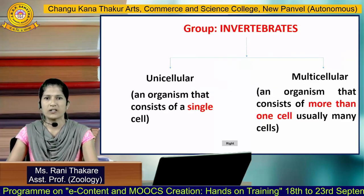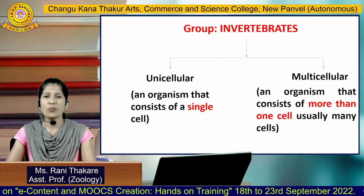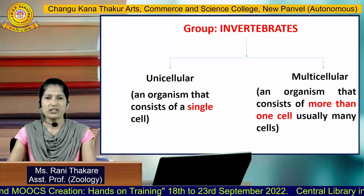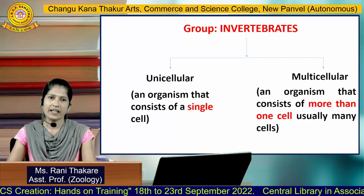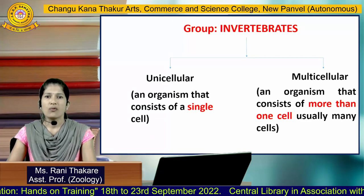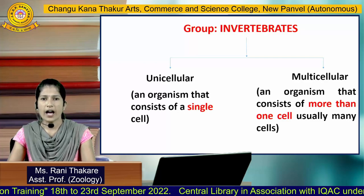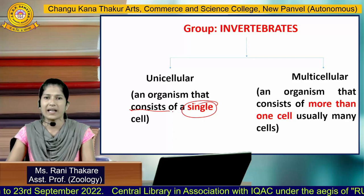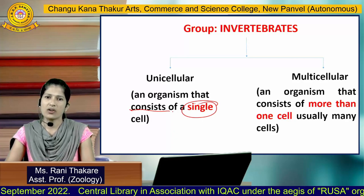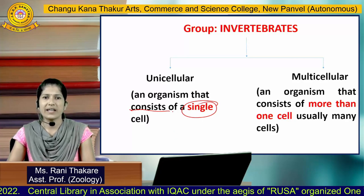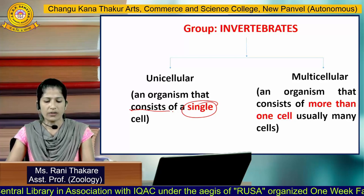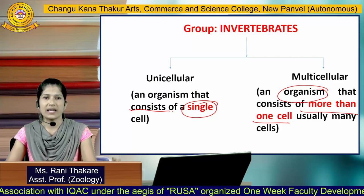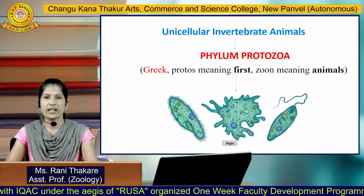On these three fundamental characteristics, animals are placed into two groups: chordates and non-chordates. The invertebrate group includes mainly two types of organisms: unicellular and multicellular. A unicellular organism consists of a single cell, while a multicellular organism possesses more than one cell.